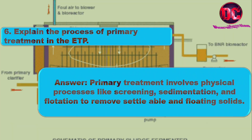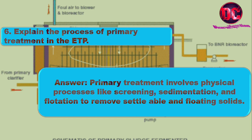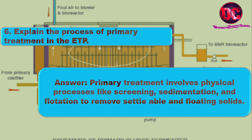6. Explain the process of primary treatment in the ETP. Answer: Primary treatment involves physical processes like screening, sedimentation, and flotation to remove settleable and floating solids.